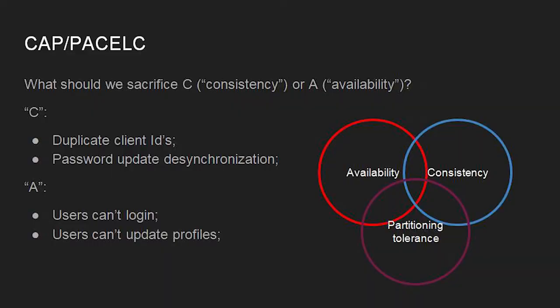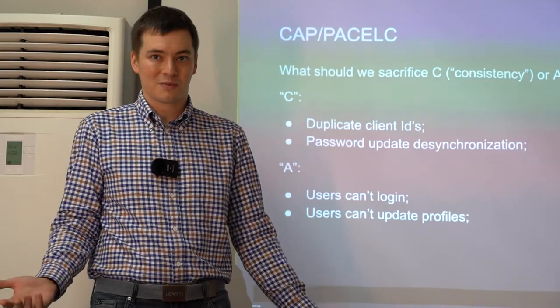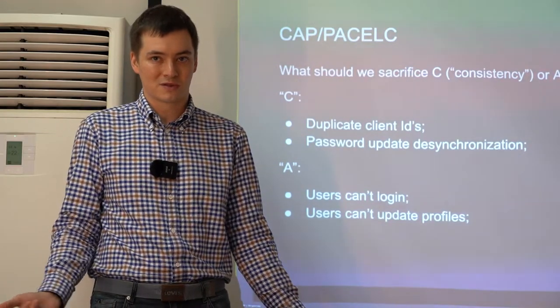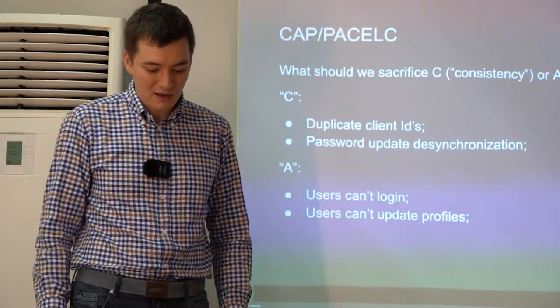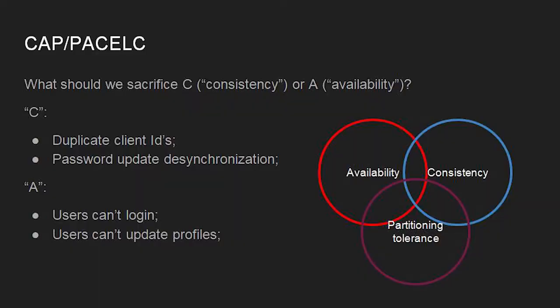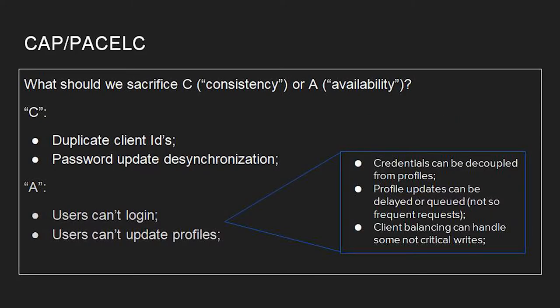On the other hand, if you make the system strictly consistent but give up some availability, you'll have huge issues with the business — the identity provider isn't working, users can't log in, and if users can't log in they cannot buy, sell, or use whatever your website does. So you need a trade-off. A simple solution is to decouple data that should be strictly consistent from data that should be strictly available. Credentials and customer IDs should be in a different database, while profile updates can tolerate some delay — you can use queues and it doesn't need to be instant.